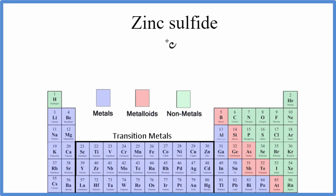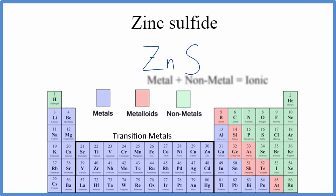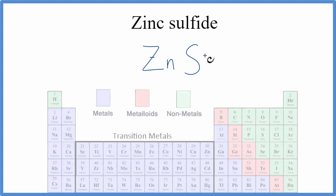To write the formula for zinc sulfide, we go to the periodic table and we look up zinc — that's Zn. Then we look up sulfur, that's S, for the sulfide. So we have a metal and a non-metal. That means we have an ionic compound. When we have an ionic compound, we need to take the charge of each of these elements into account.